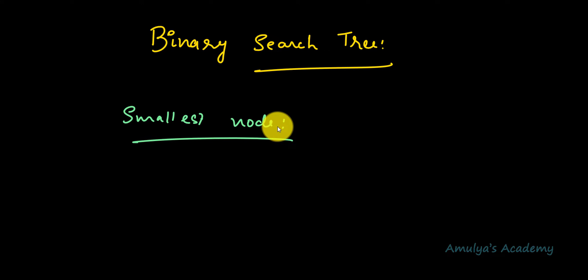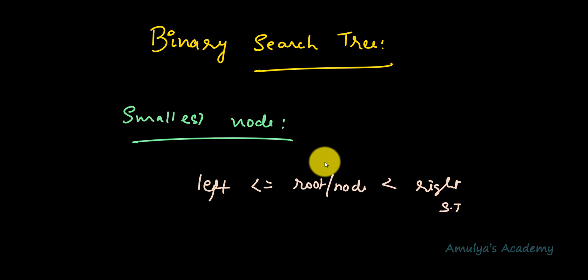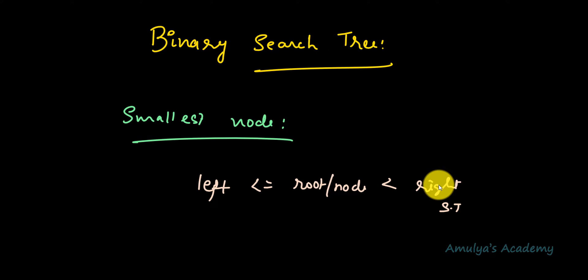The very basic property of binary search tree states that the smaller value will occur in the left subtree. As we know, binary search trees are ordered. When we insert any node to the tree, if the key of a node is smaller than or equal to the root node then we place it in the left subtree. If it is greater than the root node then we place it in the right subtree. This is the BST rule.